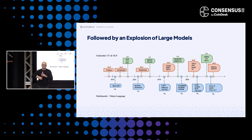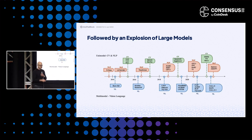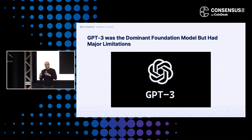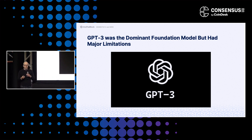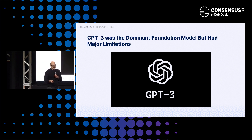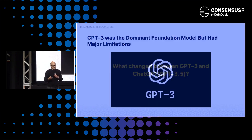After the BERT paper, there was an explosion of models. Microsoft started working on stuff, Google started working on stuff, DeepMind and others — and eventually GPT-3 became sort of the default, the most successful model in the space. But it was not mainstream; people were not going crazy about GPT-3.